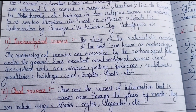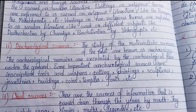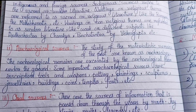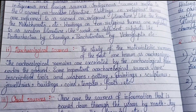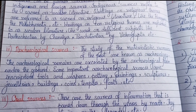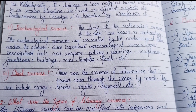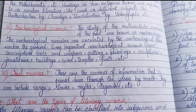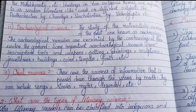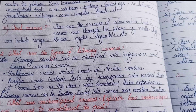Number two: archaeological sources. The study of materialistic remains of the past is known as archaeology. Archaeological remains are excavated by archaeologists from under the ground. Some important archaeological sources are inscriptions, tools and weapons, pottery, paintings, sculptures, jewelry, buildings, coins, temples, forts, etc. Oral sources are sources of information passed down through the years by mouth, including songs, stories, myths, legends, etc.